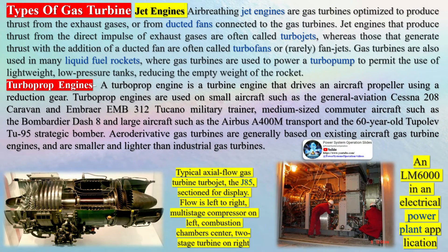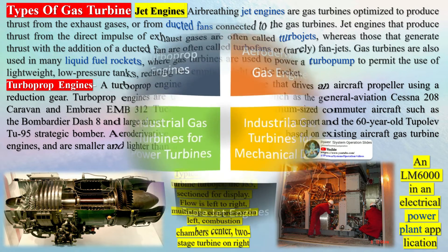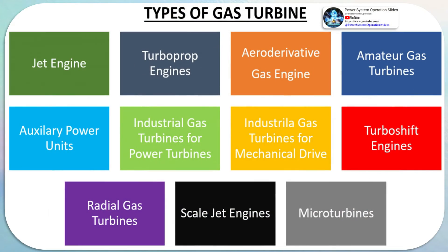Aeroderivative gas turbines are generally based on existing aircraft gas turbine engines and are smaller and lighter than industrial gas turbines. They are used in electrical power generation due to their ability to be shut down and handle load changes more quickly than industrial machines, and in the marine industry to reduce weight. Common types include the General Electric LM2500, General Electric LM6000, and aeroderivative versions of the Pratt & Whitney PW4000 and Rolls-Royce RB211.